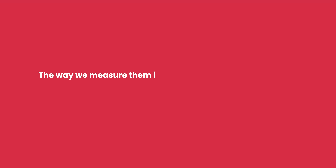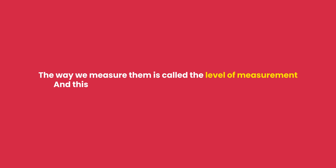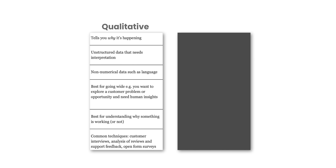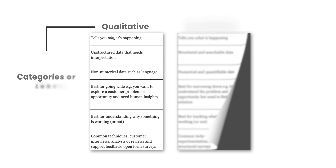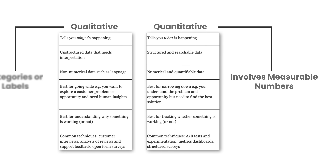Not all variables are measured in the same way. The way we measure them is called the level of measurement, and this decides which statistical techniques, graphs, and summaries are valid. Depending on the type of data, it can be either qualitative, which describes categories or labels, or quantitative, which involves measurable numbers.